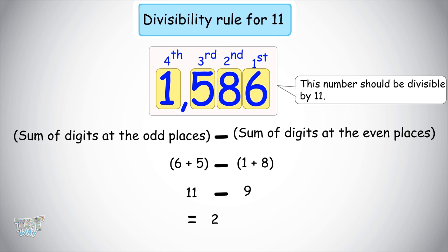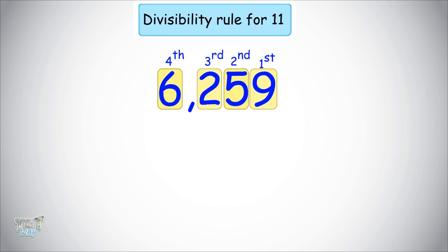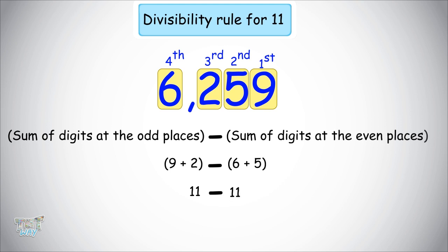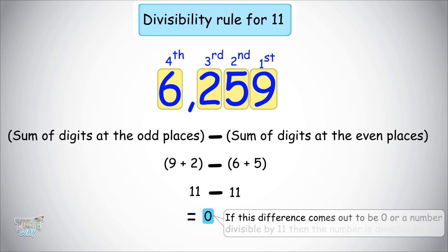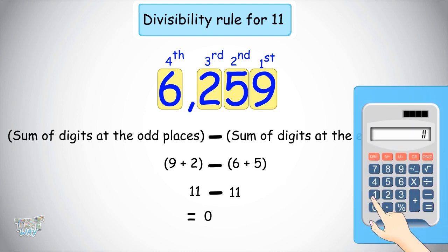You can use your calculator to check. Here we have another number: 6,259. We have to check whether or not it is divisible by 11. Mark the positions from the right: 1, 2, 3, and 4. Sum of the digits at the odd places: 9 plus 2 equals 11. Sum of the digits at the even places: 6 plus 5 equals 11. The difference is 11 minus 11 equals 0. According to the rule, if the difference comes out to be 0 or a number divisible by 11, the number is divisible by 11. Let's check: 6,259 divided by 11 comes out to be 569. So yes, it is divisible by 11.